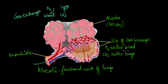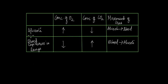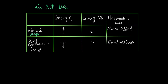Oxygen moves from the lungs into the blood, and carbon dioxide moves from the blood into the lungs. This is driven by concentration differences. In the alveoli, the concentration of oxygen is high and carbon dioxide is low, because inhaled air has more oxygen. But in the blood capillaries reaching the lungs, oxygen concentration is low and carbon dioxide concentration is high, because the blood is carrying CO₂ from cellular respiration and has used up its oxygen.